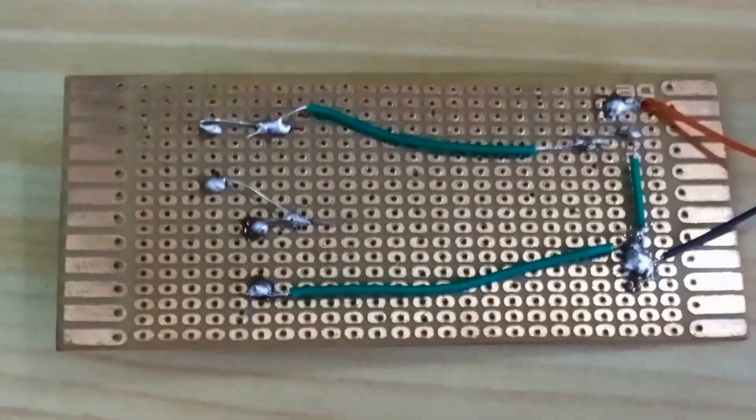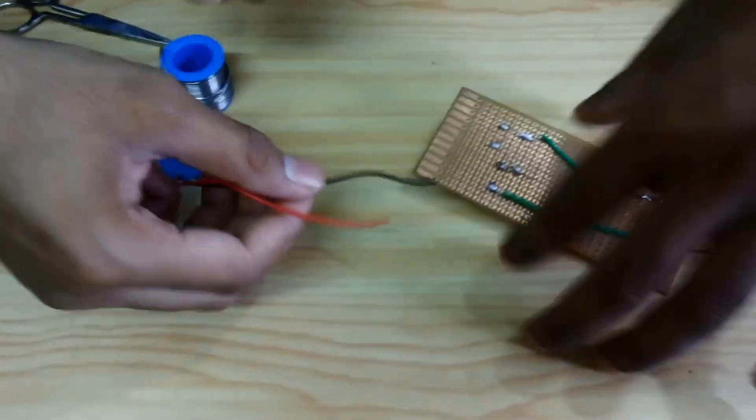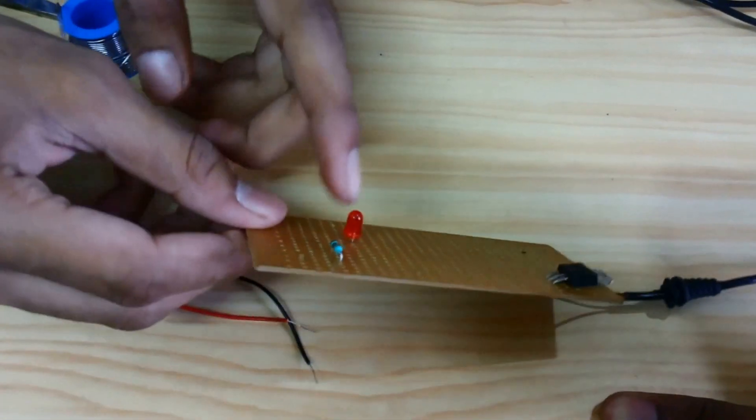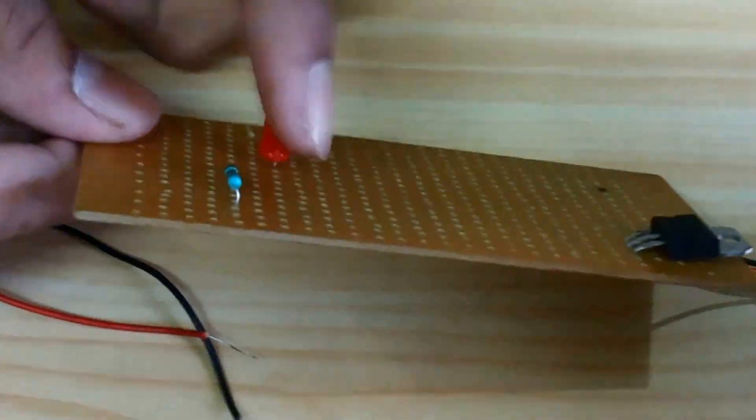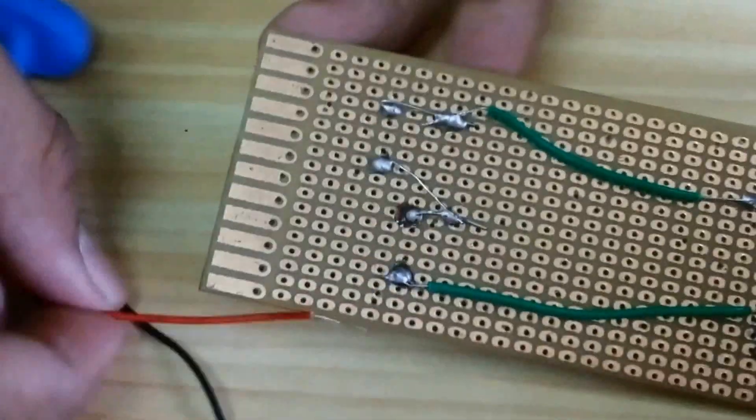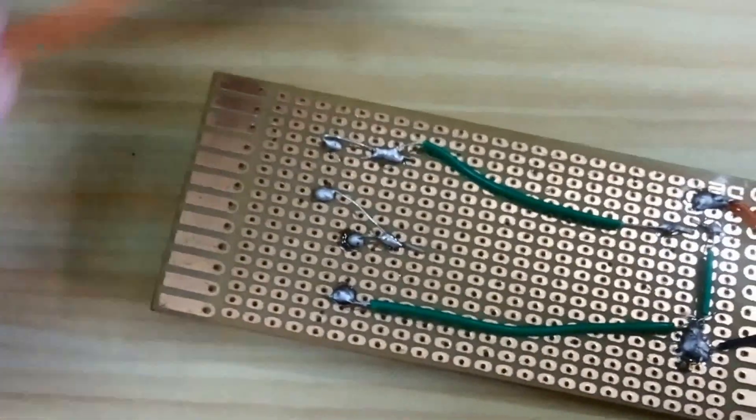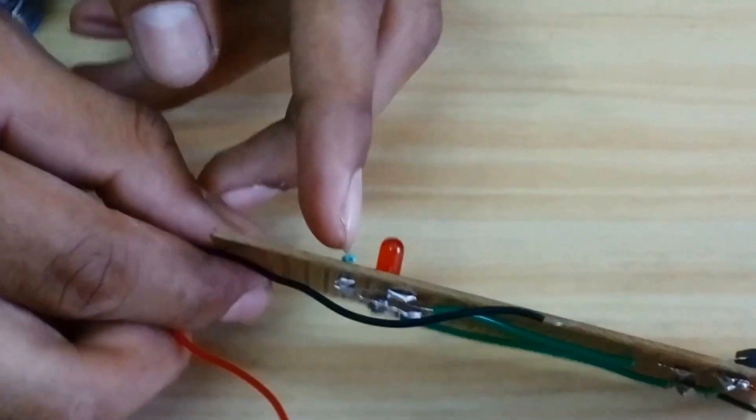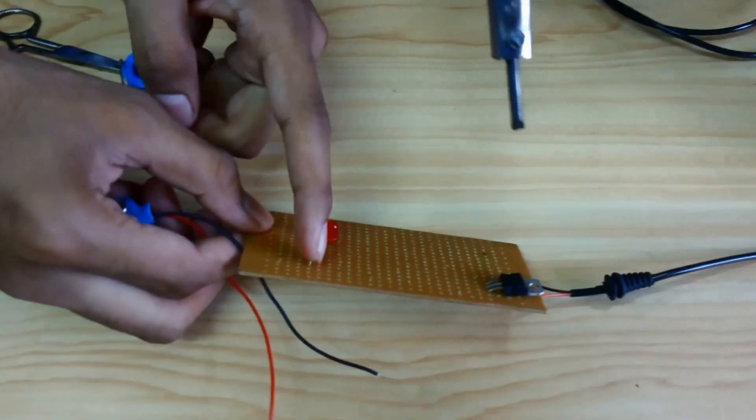Now we have to connect the supply wire with it. Here is the negative end and the positive end. The red wire is for positive and the black wire is for negative. So this part is positive.